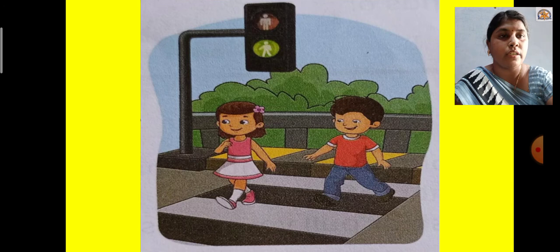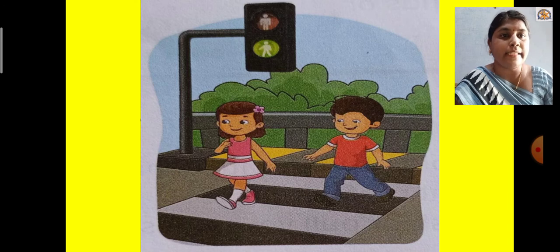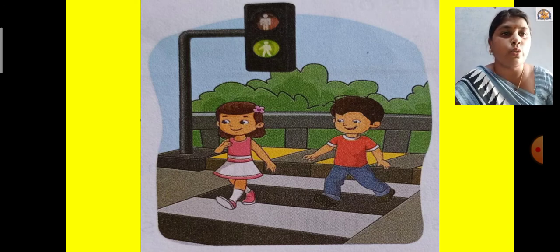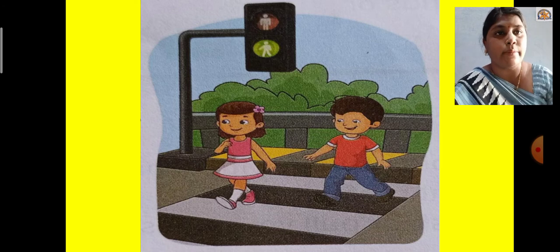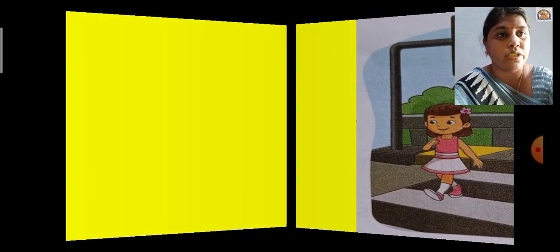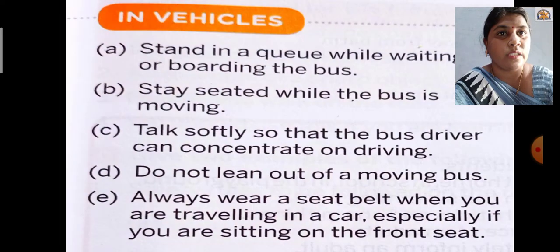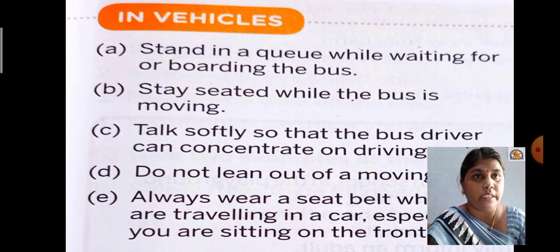See this picture of the pedestrian light — the girl and boy are crossing the road on the zebra crossing. For those who haven't seen a zebra crossing before, you can see it in this picture. Now let us see the safety rules in vehicles.